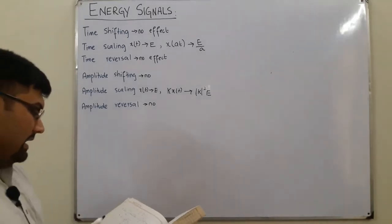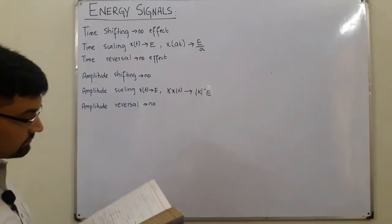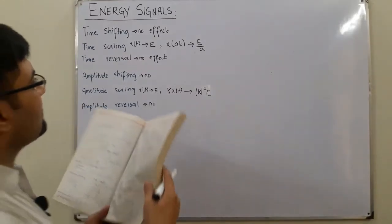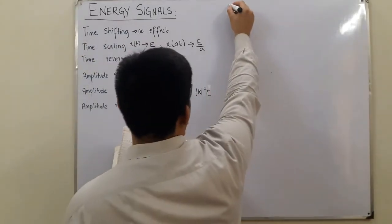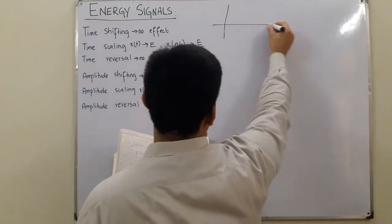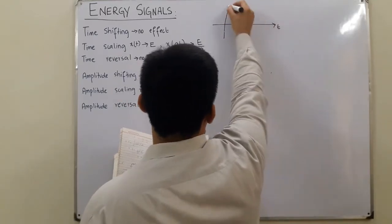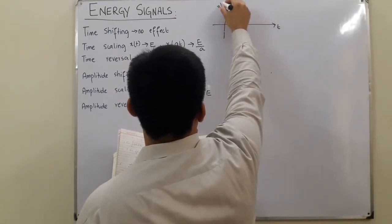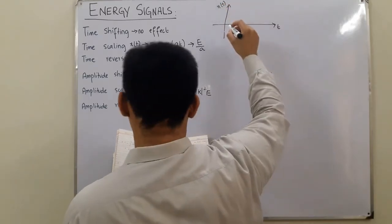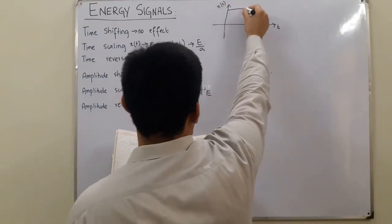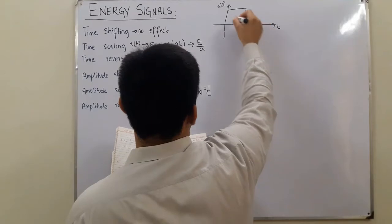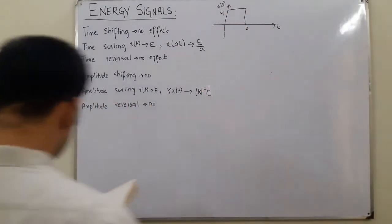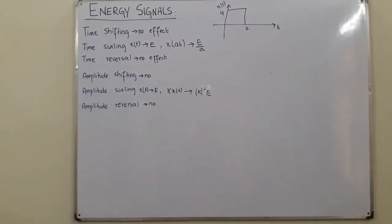Now we have an example. Let's say x(t) is given — this is t, this is x(t), with amplitude 4 and width 2, from 0 to 2. This is just a simple rectangular waveform taken so that we could have a better understanding.